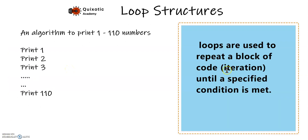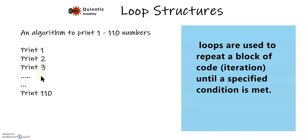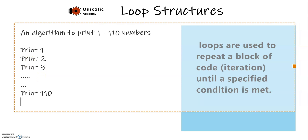This process of writing print statements again and again is called iteration, and we use loops whenever we have to perform iterations. Loops are used to repeat a block of code until a specified condition is met, so our loop is going to repeat the print process until the specified condition is met.